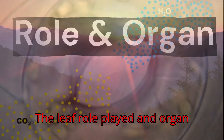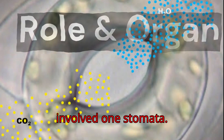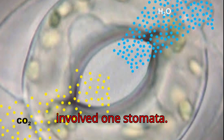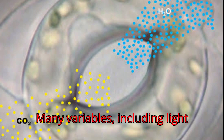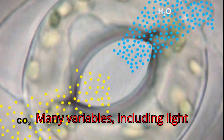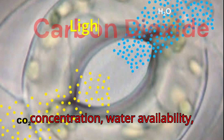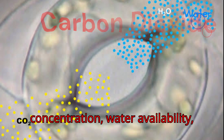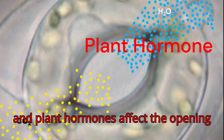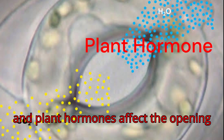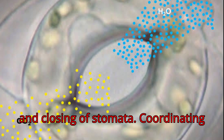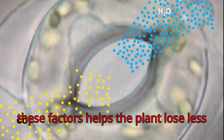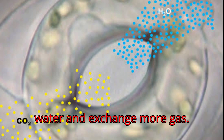Role played and organ involved. 1. Stomata. Many variables, including light intensity, carbon dioxide concentration, water availability, and plant hormones, affect the opening and closing of stomata. Coordinating these factors helps the plant lose less water and exchange more gas.